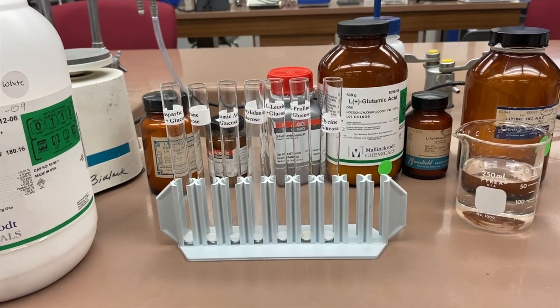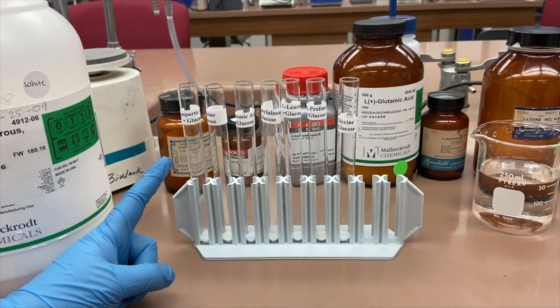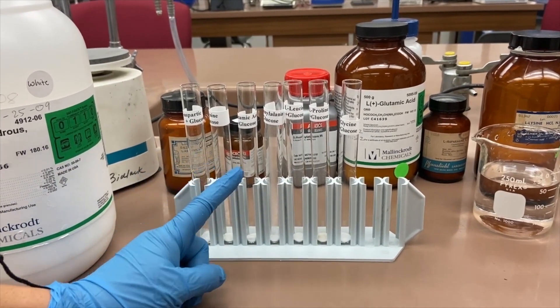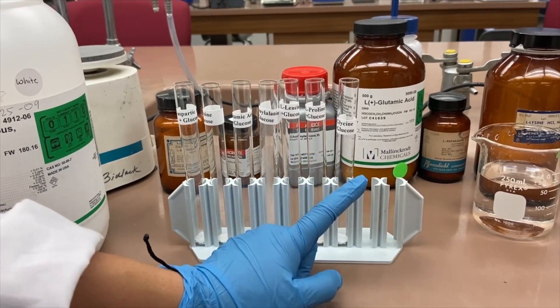To begin the Maillard reaction between amino acids and glucose, I added 0.1 grams of glucose into each amino acid tube. I have aspartic acid, lysine, glutamic acid, phenylalanine, leucine, proline, and glycine.